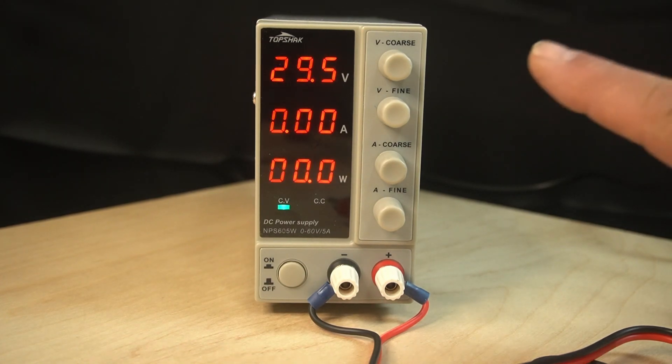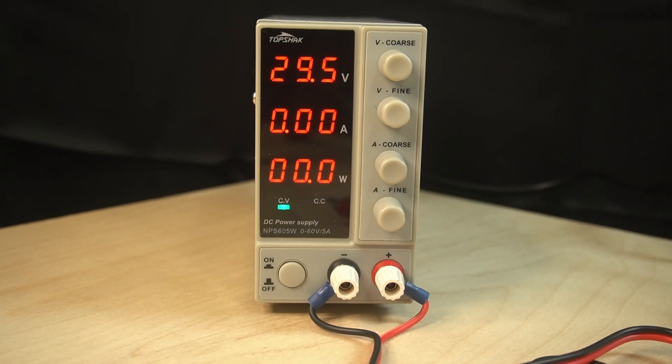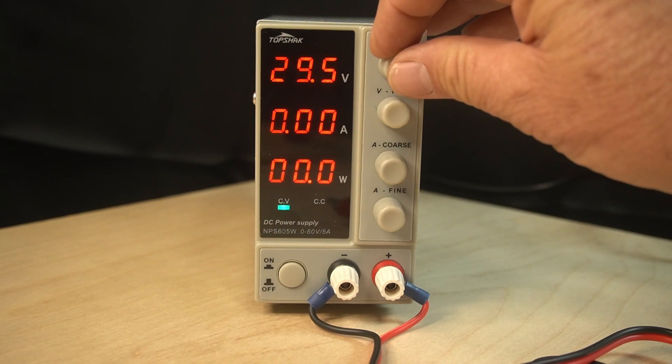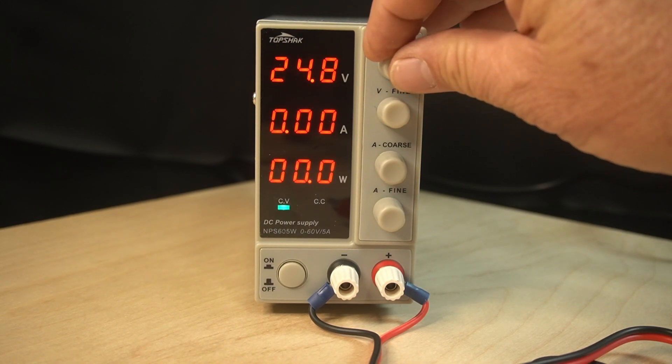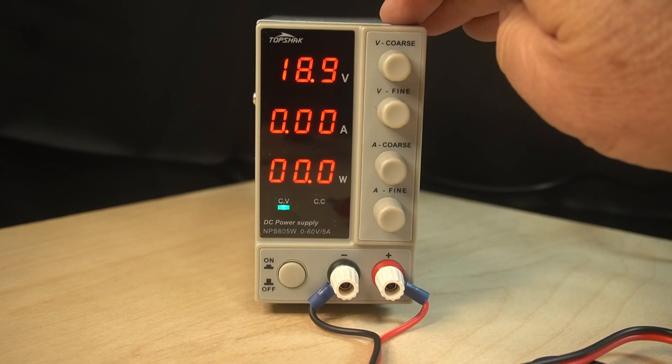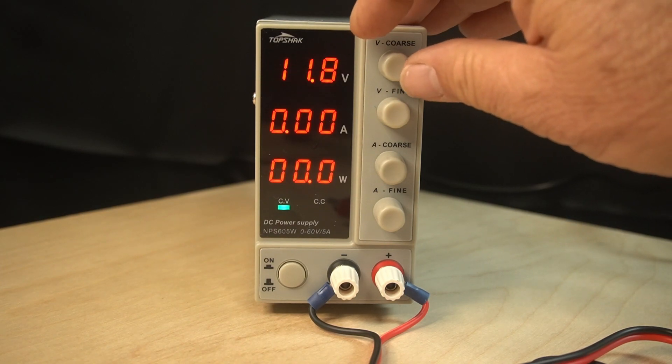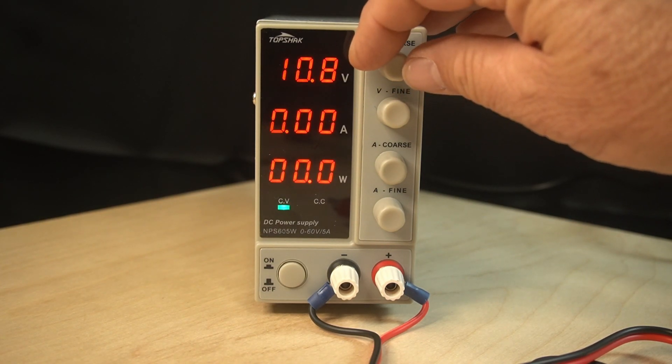You have, like I said, on the top up here, you have your coarse and your fine for your voltage. And it takes a little while to react. Depends on how fast you turn it. Like if I turn it way down like that, it will just slowly go down to where I've turned it. So we're at 10.8.